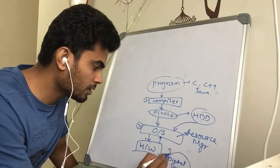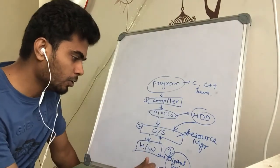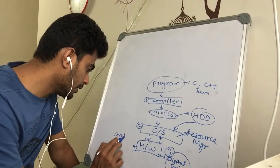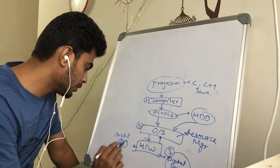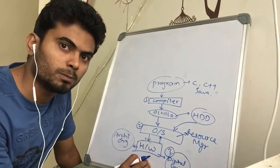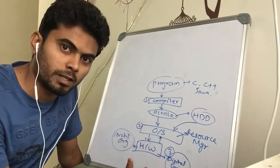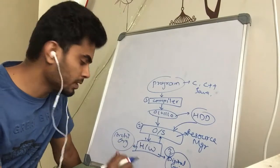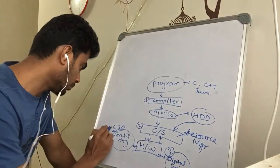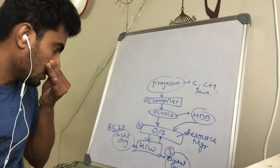Along with digital logic, you also need to study the basic architecture and organization of the system — how CPUs are designed, how RAM is structured, how cache is arranged. All those things are studied inside a subject known as computer system architecture, which is the fourth subject.